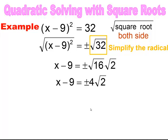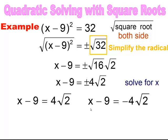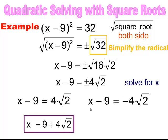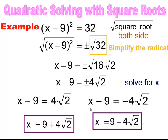Now that the radical is simplified, I can solve for x. I need to add 9 to both sides. Be careful — you can't add 9 to the 4, because the 4 is being multiplied by the square root of 2 and they are not like terms. So your two answers will be x equals 9 plus 4 times the square root of 2, and x equals 9 minus 4 times the square root of 2.